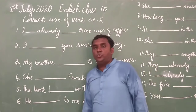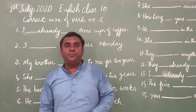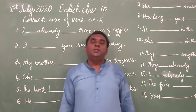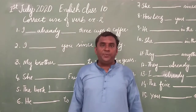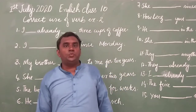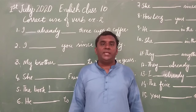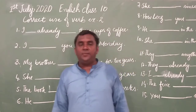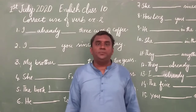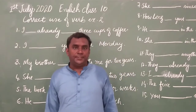In exercise number 2, the tenses being used are: one, present perfect tense, and two, present perfect continuous tense. Present perfect tense means that action which started in the present time and was completed in the present time — for that we use present perfect tense. The formation of present perfect tense is: subject + has/have + third form of verb + object.